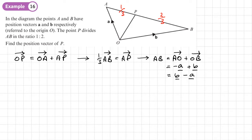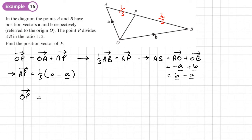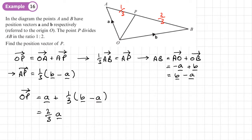So AP is one third of what we've just worked out: one third of (B minus A). Now we can say that OP equals OA plus AP, so OP equals A plus one third(B minus A). We wouldn't leave it like this — we'd simplify it just like algebra. So we have A minus one third A, which leaves two thirds A, plus one third B. So the position vector of P is two thirds A plus one third B.